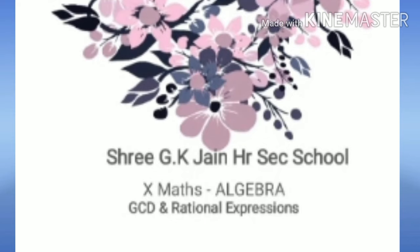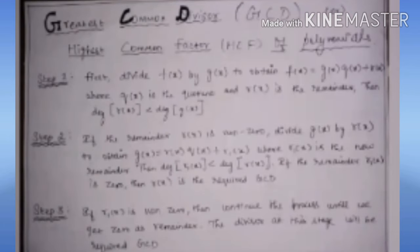Now let us see the steps involved in finding the Greatest Common Divisor — GCD, or Highest Common Factor, HCF — of polynomials. Step 1: first divide F of X by G of X to obtain F(X) = G(X) × Q(X) + R(X), where Q(X) is called the quotient and R(X) is the remainder. The degree of R(X) will be less than the degree of G(X).